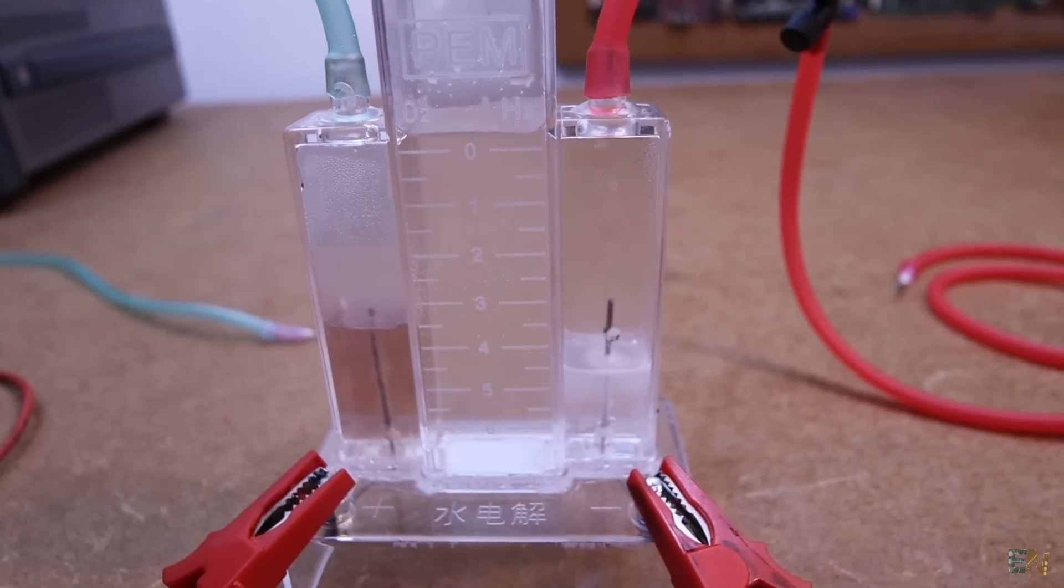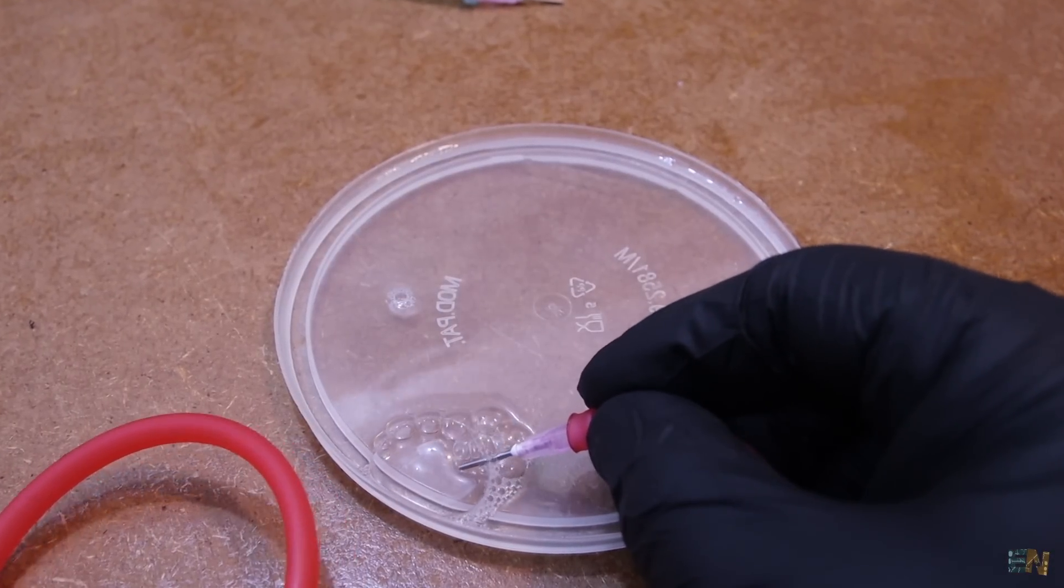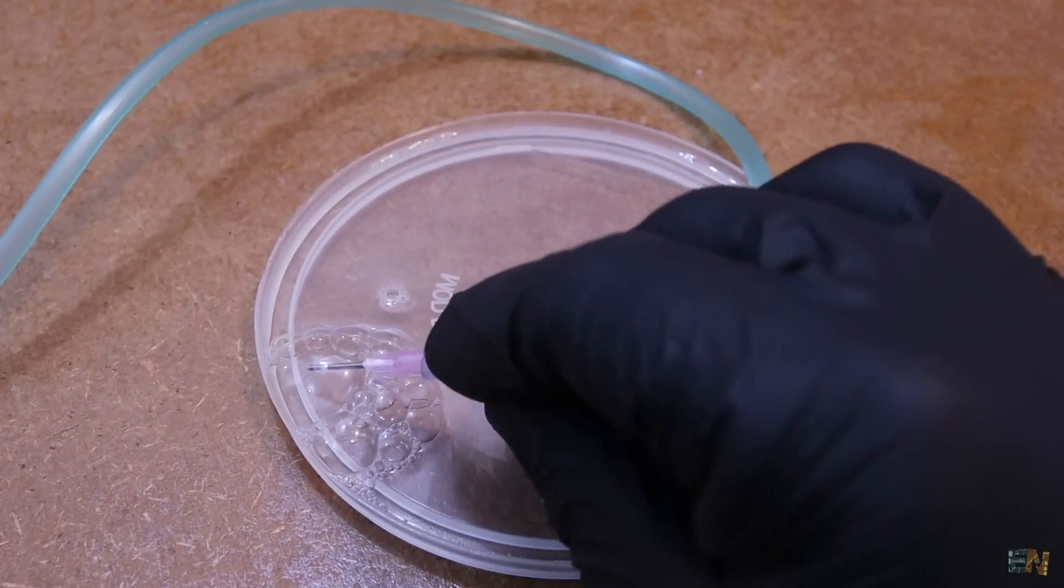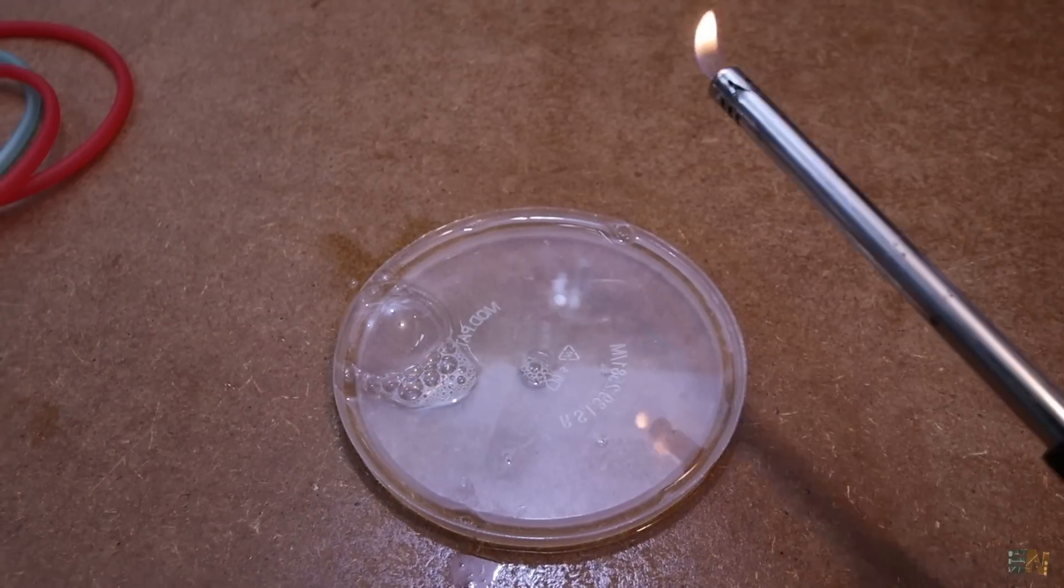And just to show you that this is hydrogen, I get some soap and water. And I create a bubble using the hydrogen gas. And to make it explosive, I also add some oxygen from the other tube. And now I light it up.